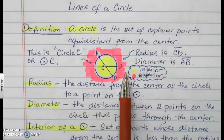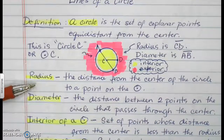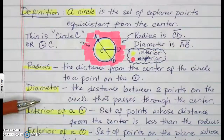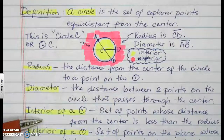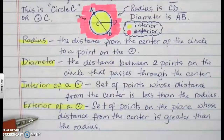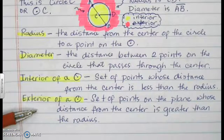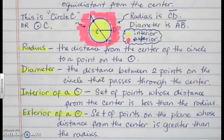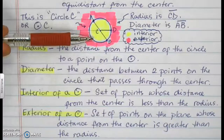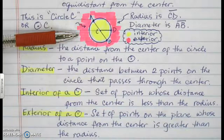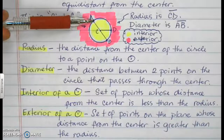The exterior points are the pink ones. By definition, the radius is the distance from the center of the circle to a point on the circle. The diameter is the distance between two points that passes through the center. The interior of the circle is the set of points whose distance from the center is less than the radius. The exterior is the set of points whose distance from the center is greater than the radius. The yellow shading indicates the interior, and the pink shading indicates the exterior.